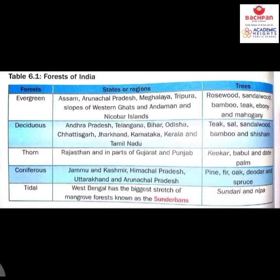This table expresses where we can find the different types of forest and what trees come under them. Evergreen forests are generally found in Assam, Arunachal Pradesh, Meghalaya, Tripura — the Seven Sisters — Western Ghats slopes, and Andaman and Nicobar Islands. Trees like rosewood, sandalwood, bamboo, teak, ebony, and mahogany are found under the evergreen forest.